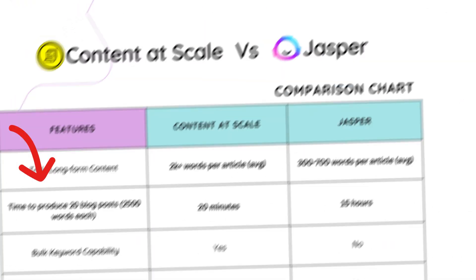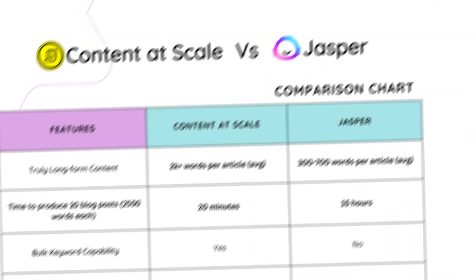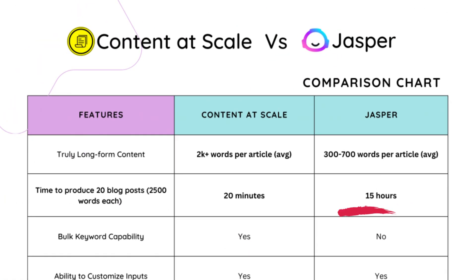The next feature is the time it would take to write 20 articles. With Content at Scale, it's around 20 minutes — roughly a minute an article — and each one of those articles is around 2,500 words. The amount of time it takes to use Jasper to write the same amount of articles is around 15 hours. Quite a difference.